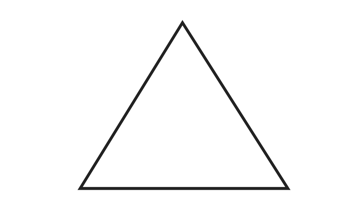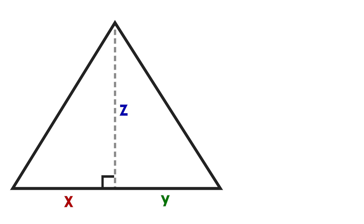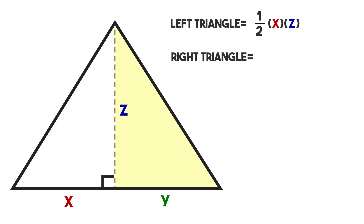One thing we can do is add a line from this top point, intersecting the base at a right angle — so that line is perpendicular. If we look at this whole figure, we can see it as two right triangles. So let's add some labels: we'll call that x, that one y, and that height z. We already have the formula for the area of a right triangle. For our left right triangle, we have one half base x times height z. And for our right right triangle, we have one half base y times height z.